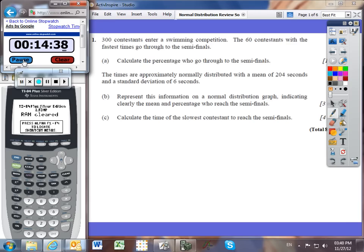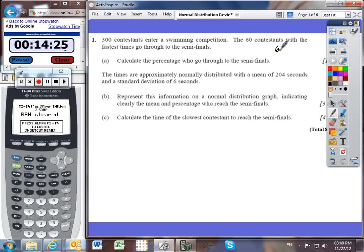300 contestants enter a swimming competition. The 60 contestants with the fastest times go through to the semifinals. Calculate the percentage who go through to the semifinals. Well we've got 60 of our 300 contestants that got through to the semifinals.